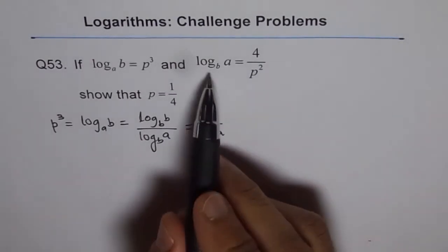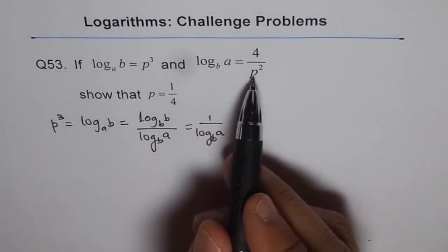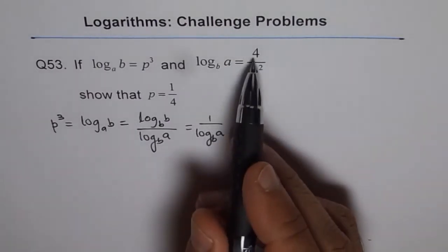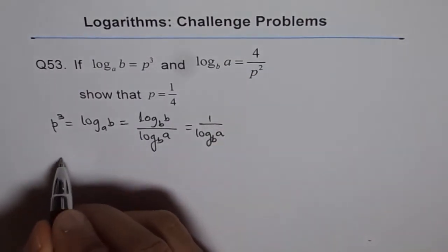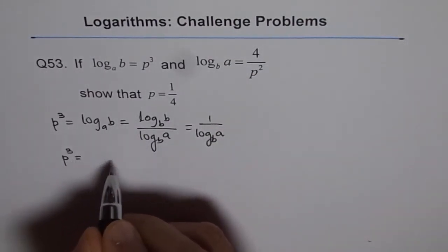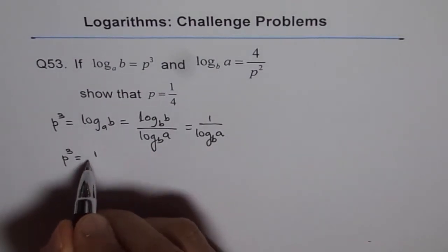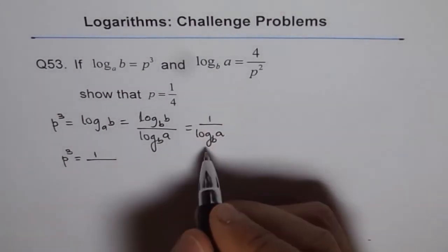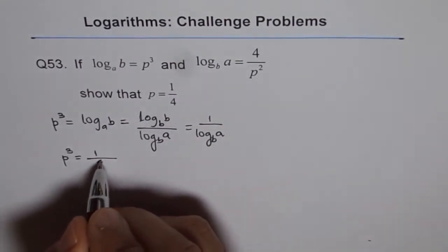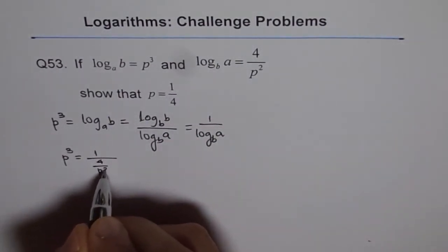So what is log B of A? It is given as 4 over P squared. So we can substitute this value. So we have P cubed equals 1 divided by 4 over P squared, which is log B of A. So we'll say 4 over P squared.